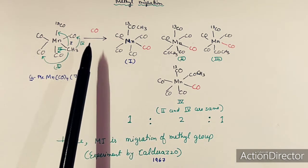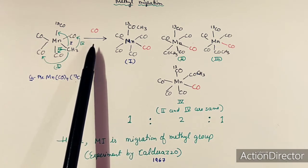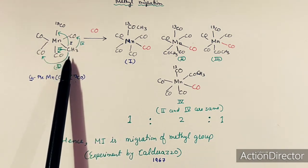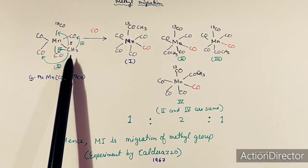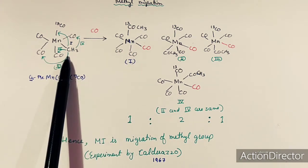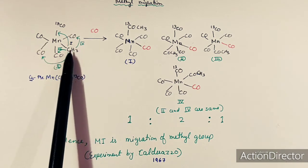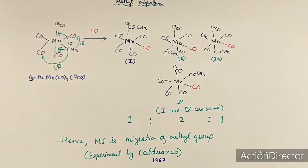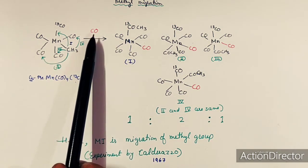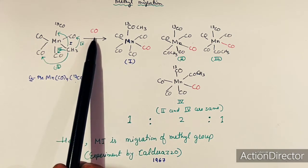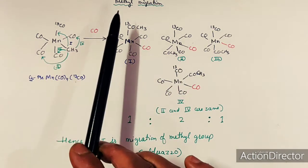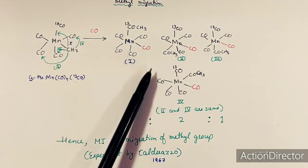The experiment was done in the presence of CO because migratory insertion requires an incoming ligand to fill the vacant site created during migration or insertion. Without this ligand, the backward reaction may easily occur — the group can migrate back to its initial position — so the experiment is performed with a ligand to bind at that vacant site.